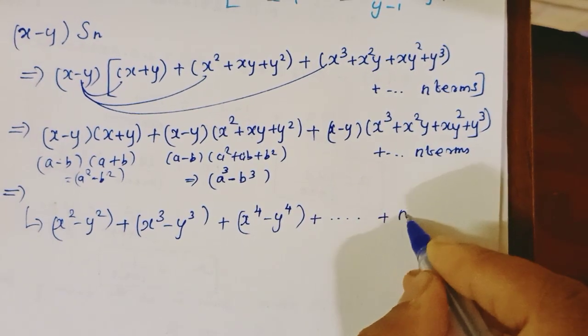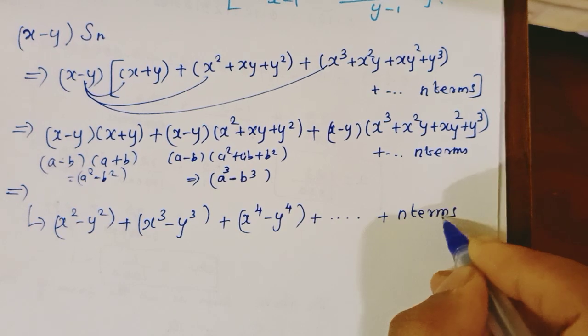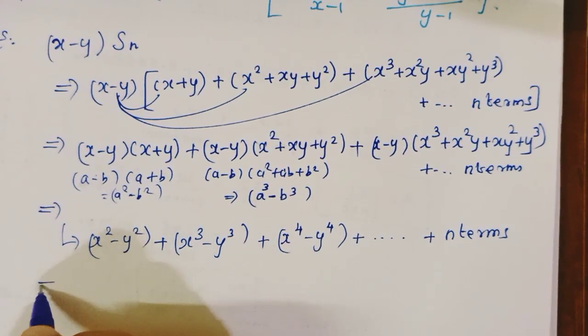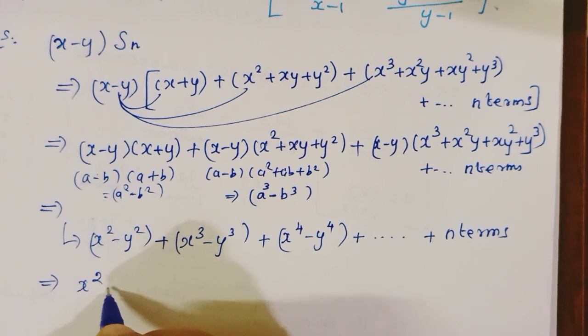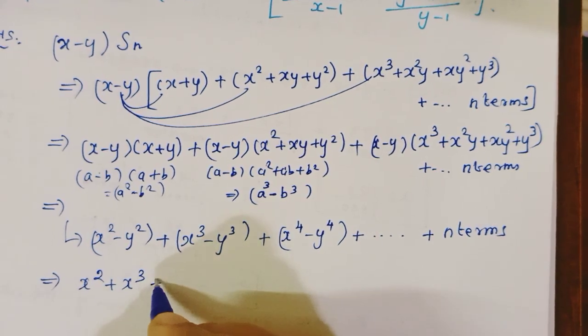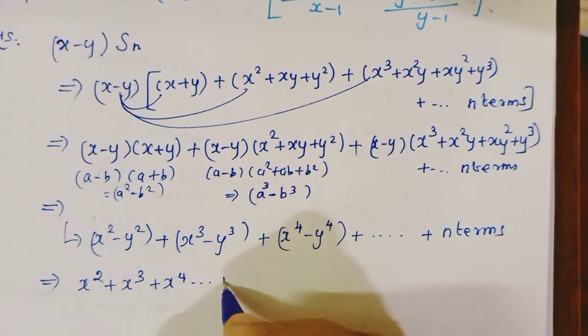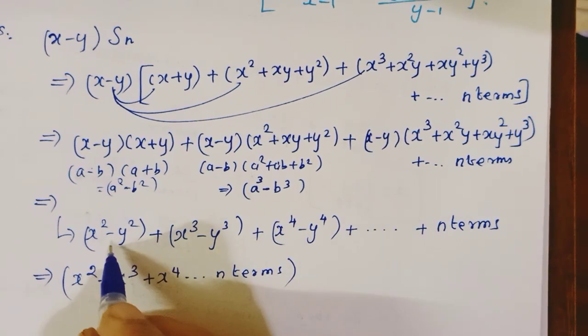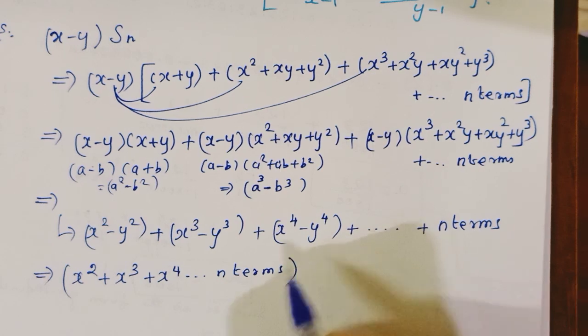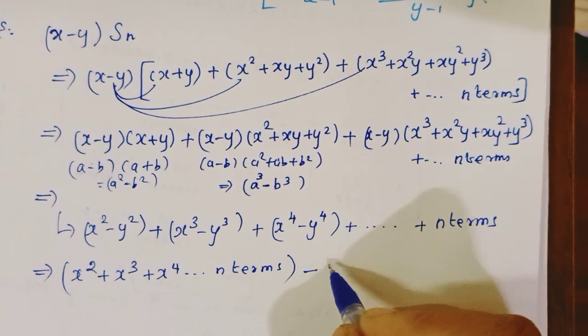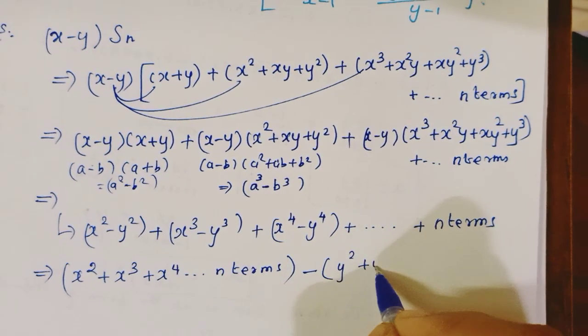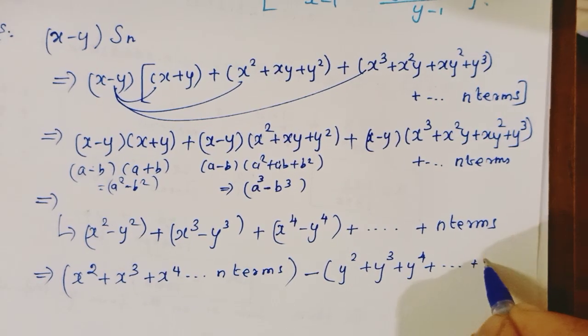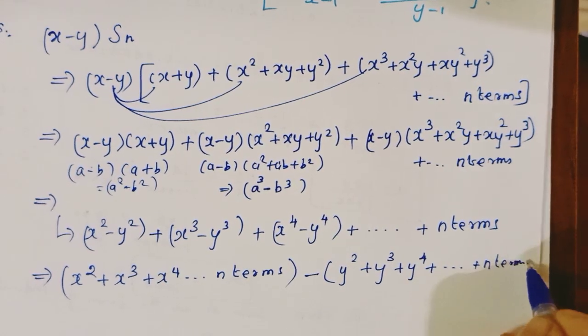Up to n terms it continues. This is a series. Then we can do x²+x³+x⁴ up to n terms minus y²+y³+y⁴ up to n terms.